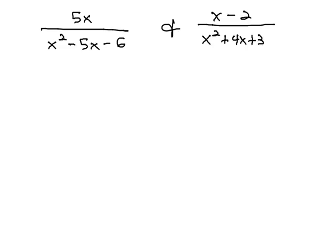This problem does have an additional step at the beginning, in that we have to identify the factors in the denominator. Multiplying the first one to negative 6 and adding to negative 5 would be negative 6 and positive 1. So we have x minus 6 times x plus 1,